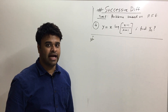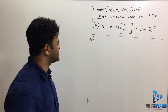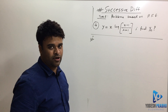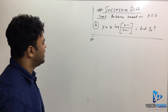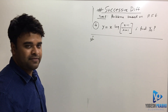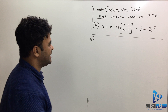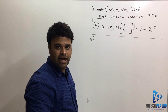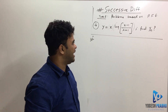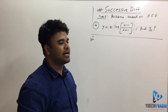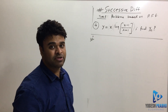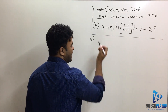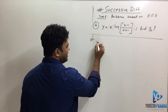Now let's look at the next question. This question has y given to you and you're supposed to find the nth differentiation of y. The first thing you will notice is that this is a product of two terms and we don't really have any formula for the product — but maybe we can simplify this question. We have log of a by b, and we can always simplify that.